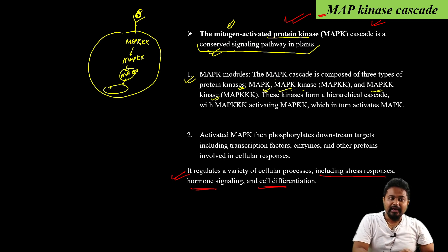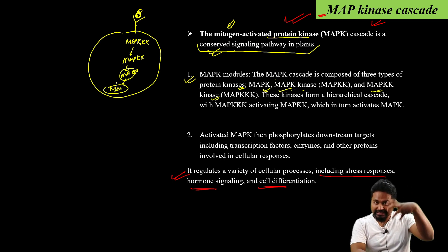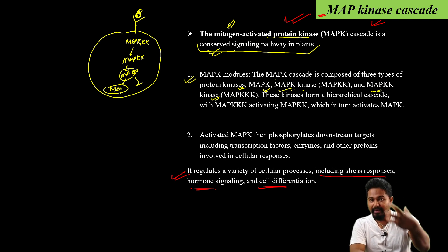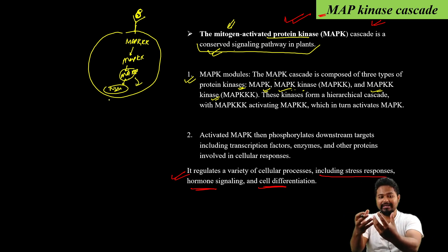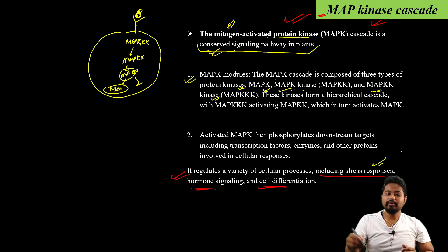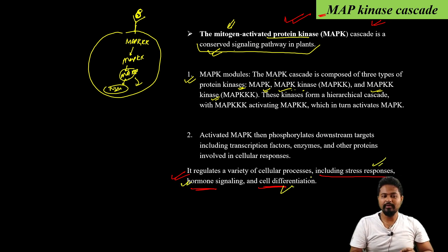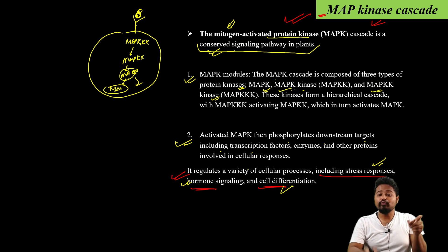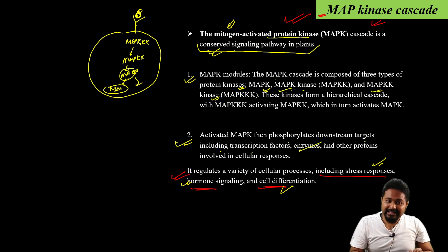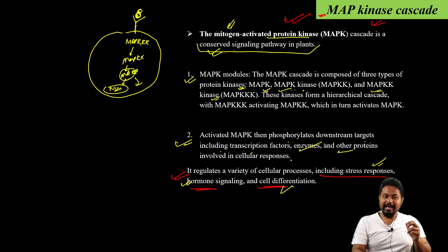The activated MAPK moves into the nucleus, where proteins directly activate gene expression. Stress response, hormone signaling, and cell differentiation are regulated. Activated MAPK phosphorylates downstream targets including transcription factors. These transcription factors and enzymes and other proteins inform cellular responses.